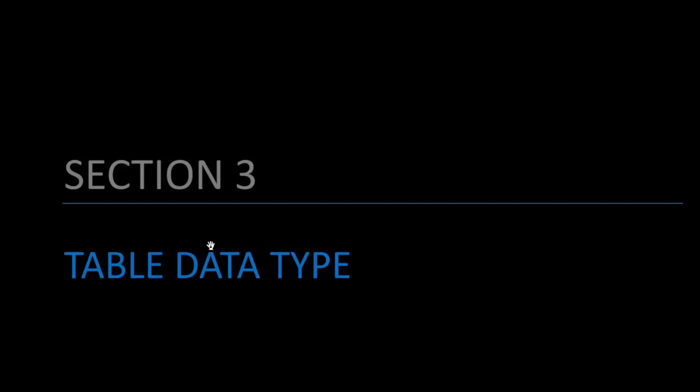In section three, we will be looking at the table data type. We will cover how to create tables, add metadata about the tables, row selection and reordering, different properties of tables, how to store and retrieve the table from memory, and operations such as adding and deleting columns from a table.